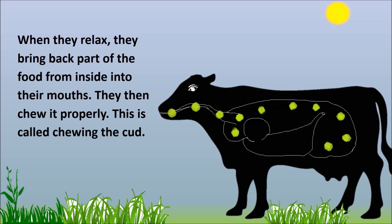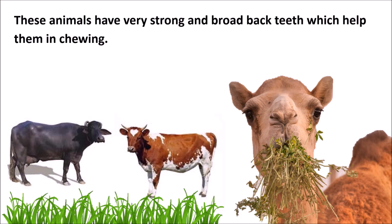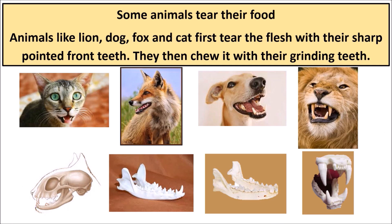These animals have very strong, broad back teeth which help them in chewing. Some animals tear their food — animals like lion, dog, fox, and cat first tear the flesh with their sharp pointed front teeth, then chew it with their grinding teeth.